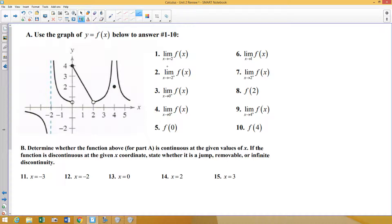Number one, limit as x approaches negative 2. Notice there is no distinction for left or right, which means we have to look at both sides. At negative 2, we have a vertical asymptote. One side's going up, other side's going down. They do not meet, therefore does not exist.